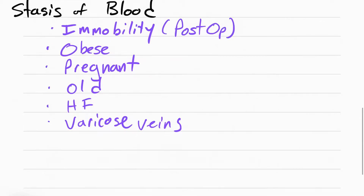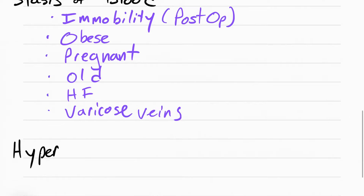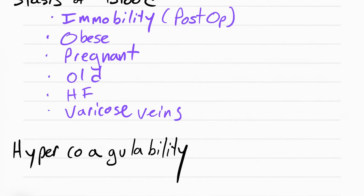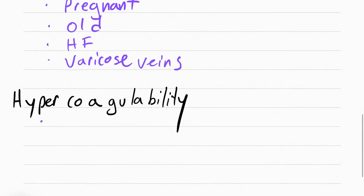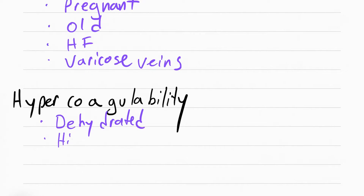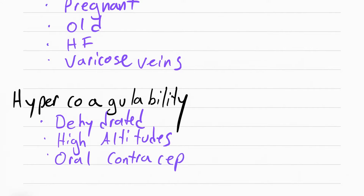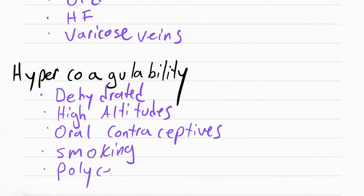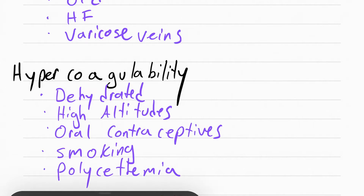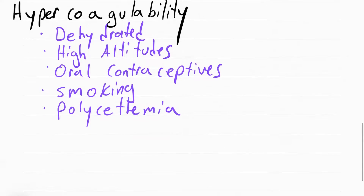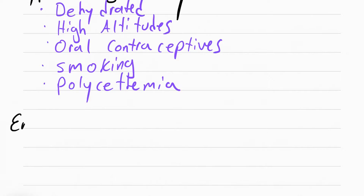The next thing that can increase the chance of getting a DVT is something called hypercoagulability, which means the blood is very likely to clot. This includes anyone who's dehydrated because the blood gets thicker, high altitudes, contraceptives, smoking, and something called polycythemia, which is when the patient makes a lot of red blood cells and the blood becomes viscous or thick.